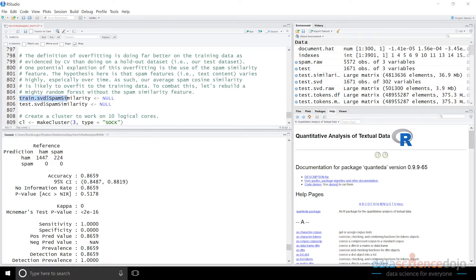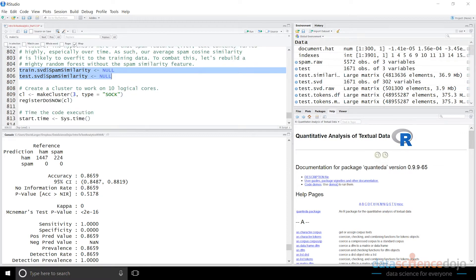So what we said was, let's backpedal a little bit and let's take out the cosine similarity, the similarity feature from the training data and see if we actually can get some generalization back into the model. So if you see here, it's pretty easy to do in R. If you set a column on a data frame, a variable on a data frame to null, it gets removed. So what I'm doing here in these two lines of code is I'm removing the spam similarity from the training data and the spam similarity feature from the test data.